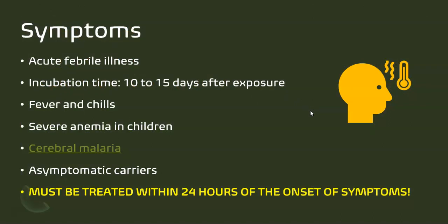The symptoms associated with malaria are acute febrile illness — you will have a fever — and this usually occurs 10 to 15 days after exposure. There is a long duration between exposure to the Plasmodium and manifestation of symptoms. You will have fever, chills, and severe anemia in children, which is why it causes mortality in young children. There have also been cases of cerebral malaria because the protozoans can cross the blood-brain barrier and enter the brain, which becomes life-threatening.